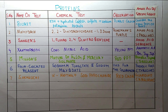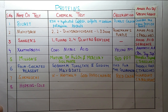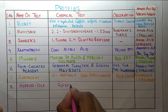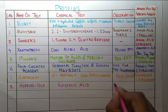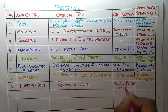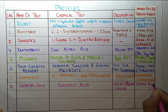The next test is the Hopkins-Cole test. In this test we use glyoxylic acid. A violet-purple color is observed. It confirms the indole ring, which is present in tryptophan.